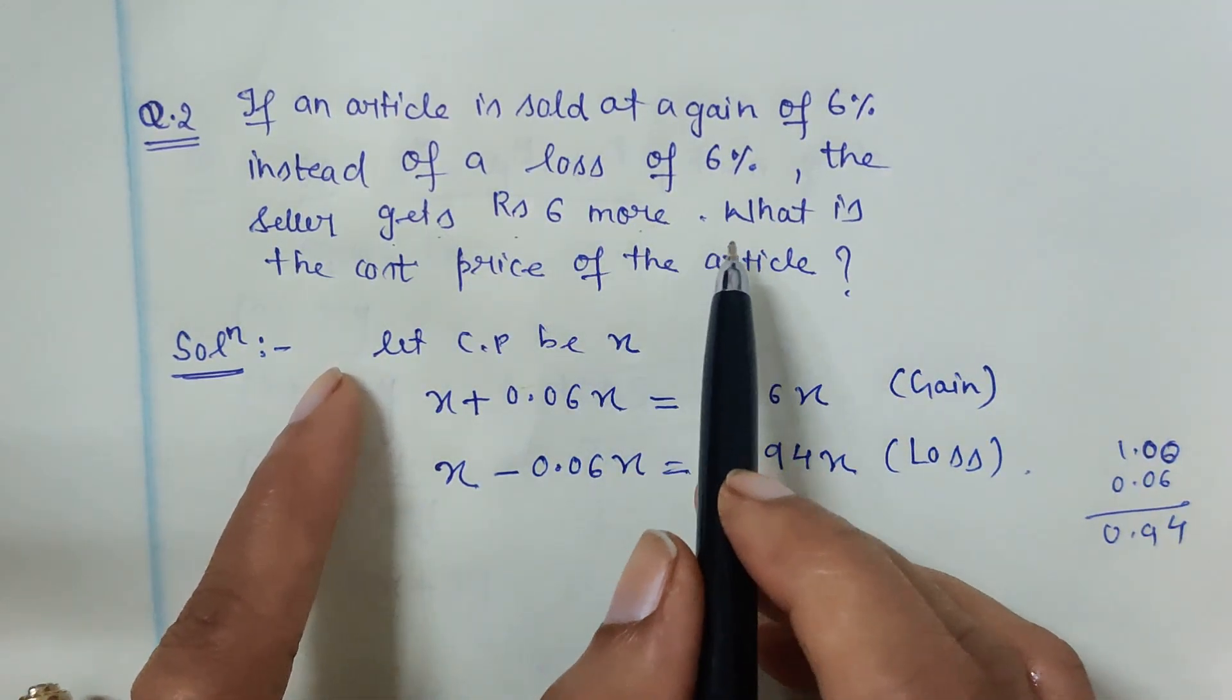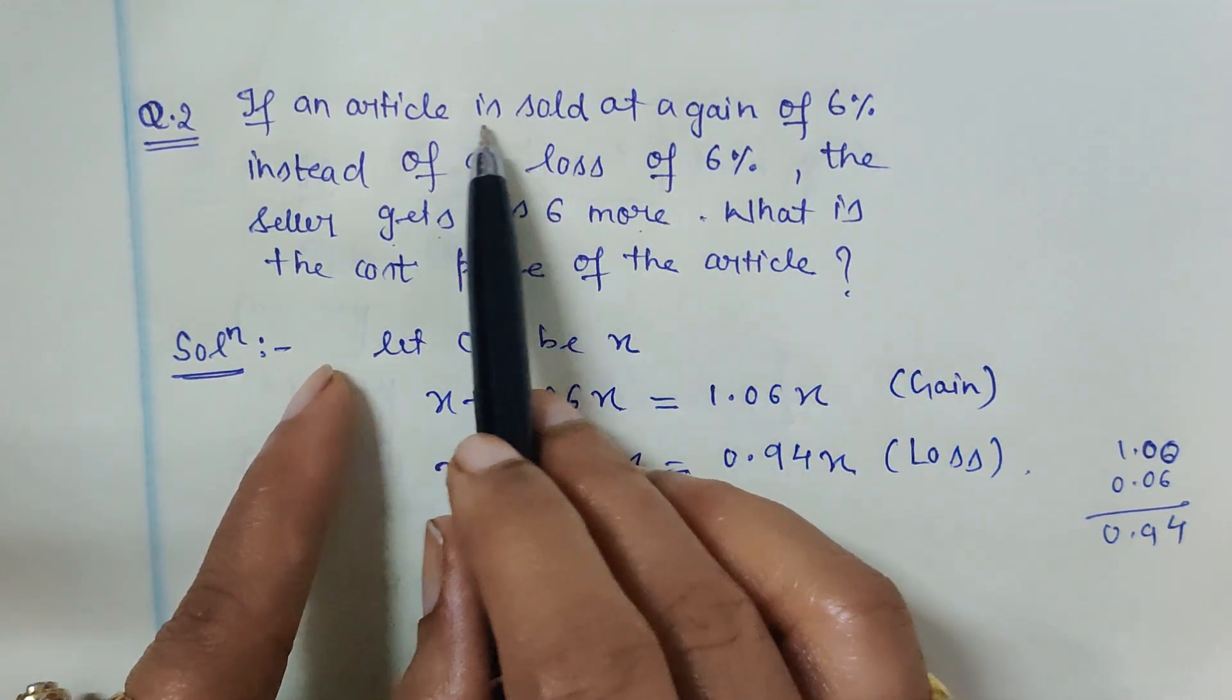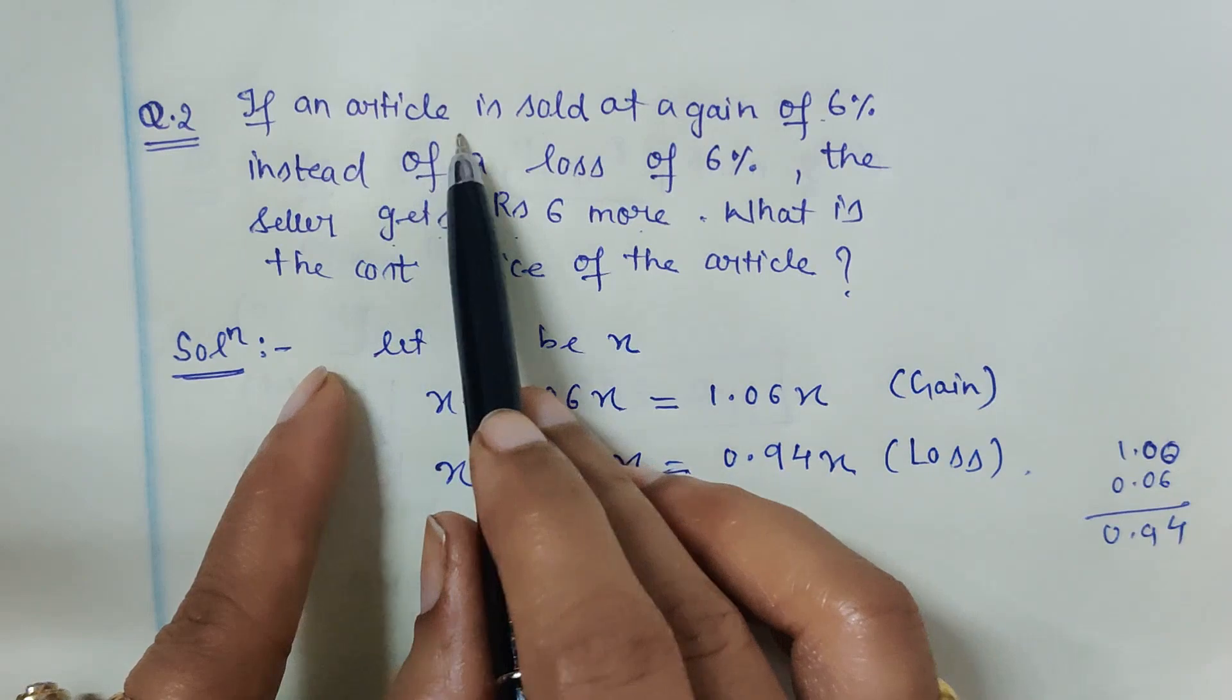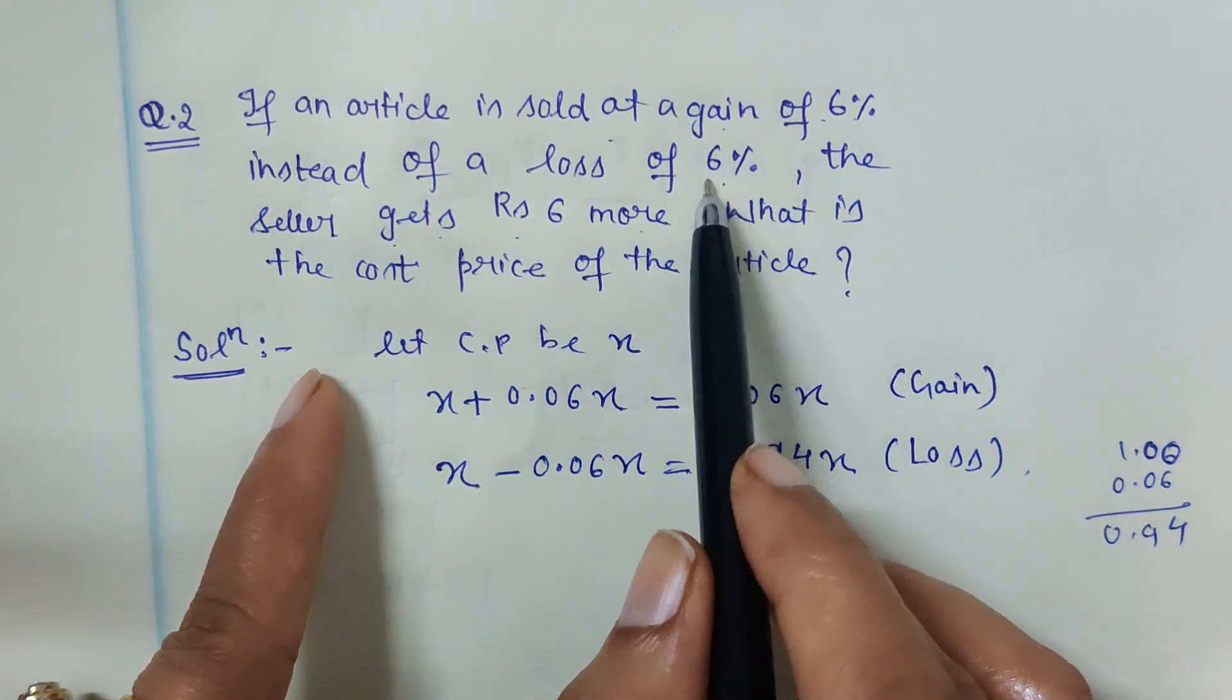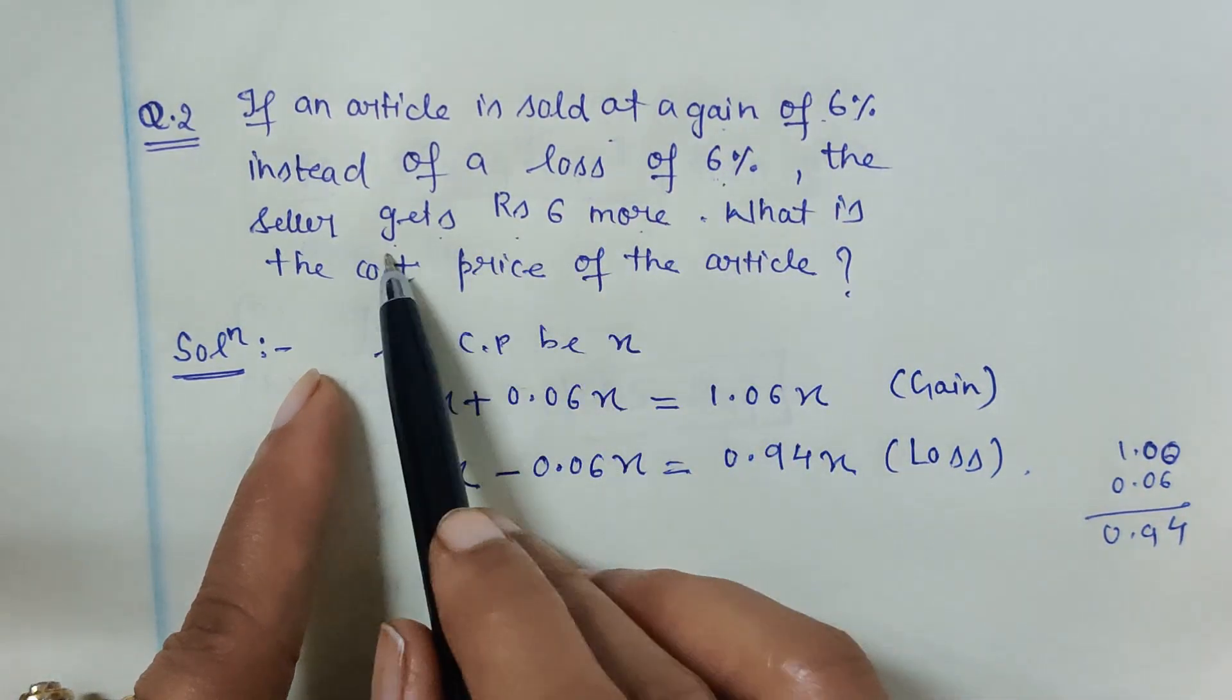Now it is given that the seller gets rupees 6 more if this is the case. The case is: if an article is sold at a gain of 6% instead of a loss of 6%, that means the difference we are discussing. The seller gets rupees 6 more.